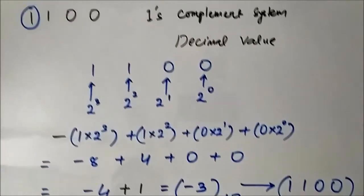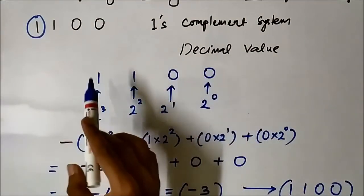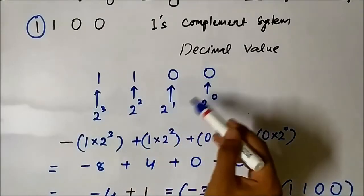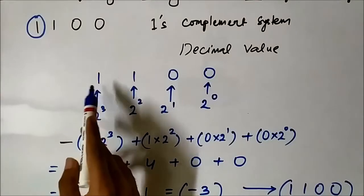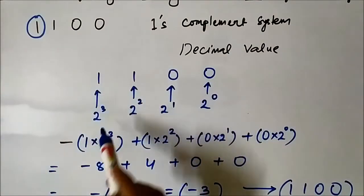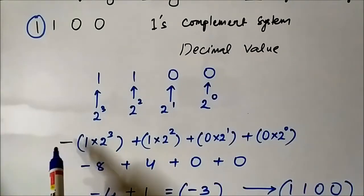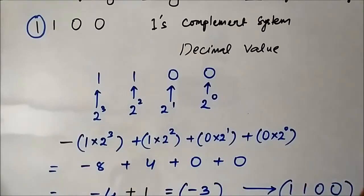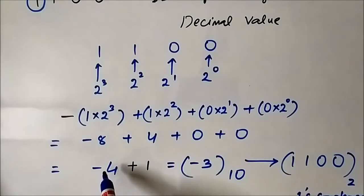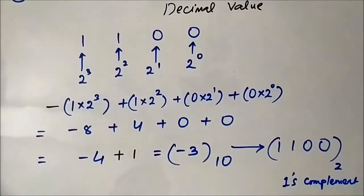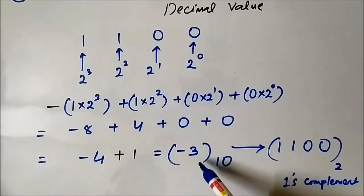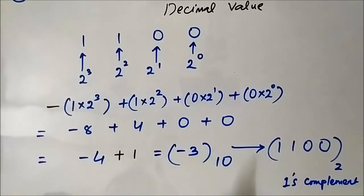So there are three important steps. First, write the given signed binary number. Then assign the weight values — 2 to the power 0, 1, 2, 3, and so on. Then for the extreme left bit, the MSB, include a negative sign only in that MSB bit weight. Find out the value of the expression — that is not the final value. Then you add plus 1 to it, and then you get the required value in base 10 form. Let us take another example to understand it better.